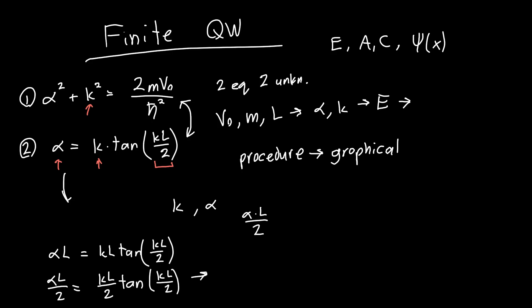So if we do that, we just get alpha L over 2 is equal to kL over 2 times tangent of kL over 2. Or if I want to make some really nice substitutions, let's say that y, this unitless variable, is equal to alpha L over 2, and x is equal to kL over 2, then this equation just becomes y is equal to x times tangent of x. And that's absolutely gorgeous. It's so much prettier than the equation that we were dealing with. There's no Ls, there's no alphas, it's just plotting variables, y and x.